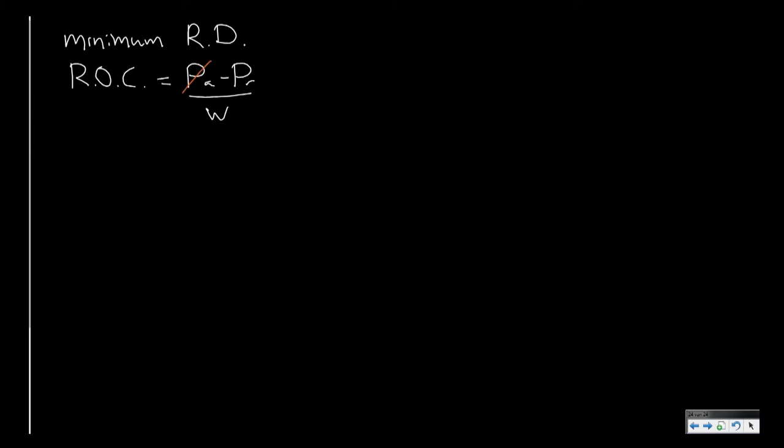Now of course the aircraft does not have power, so this term equals zero. And we can rewrite this as being minus drag times velocity, which is power required, divided by the aircraft weight. Now before I continue with this equation, we should note that of course the second equation of motion states that lift should be equal to weight.